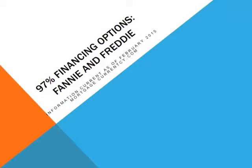Welcome to today's webinar for Mortgage Currency's 97% Financing Options for Fannie and Freddie. As you all know, they announced in December of 2014 that they were willing to increase the LTVs from 95% to 97% on two of their products. I'd like to go over those basic parameter changes today and give you some insight on that.